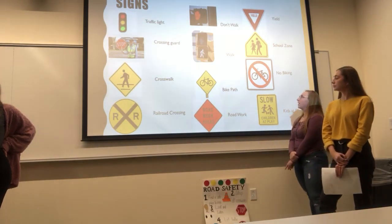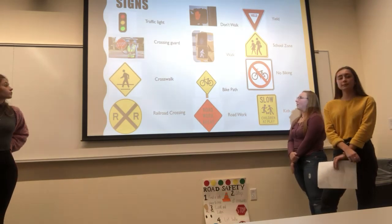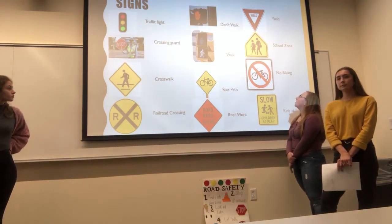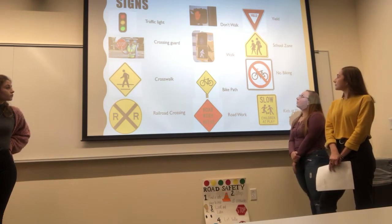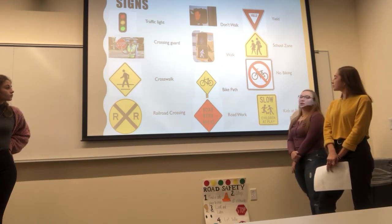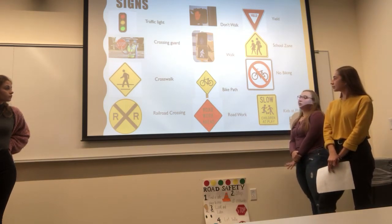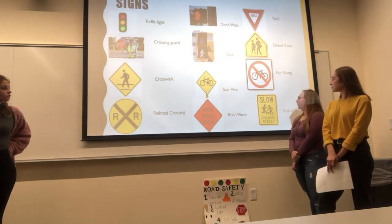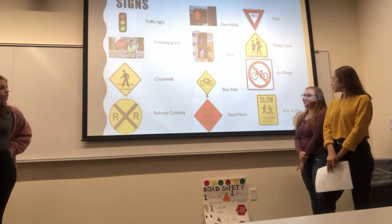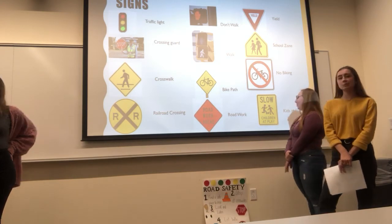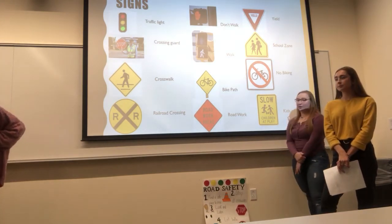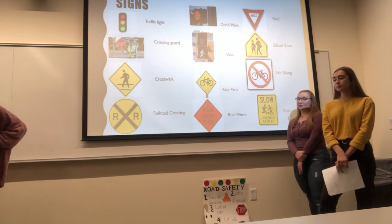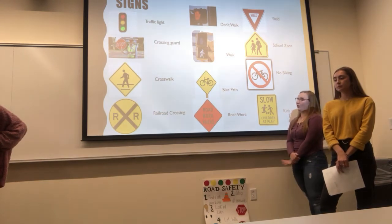A yield sign means that cars are going to be slowing down, so you should be aware of that. A school zone sign means cars know there are kids there, so they know to watch out for you. The no biking sign means you should not be riding a bike in that area. And the kids at play sign means cars know they should be aware of children — but they don't always see those signs, so make sure you're always aware at all times.